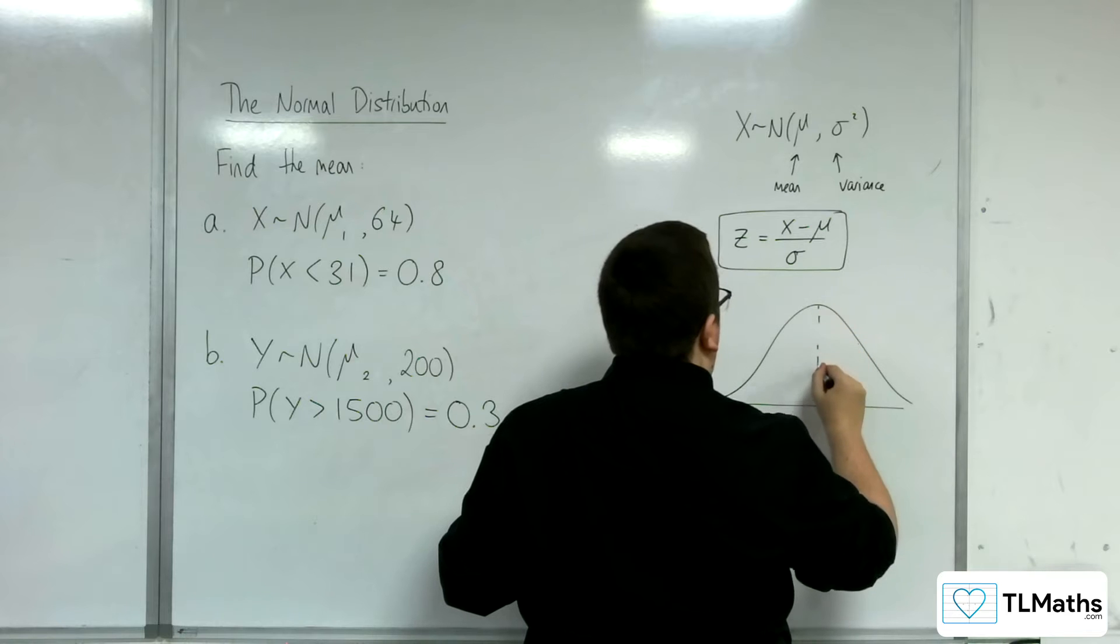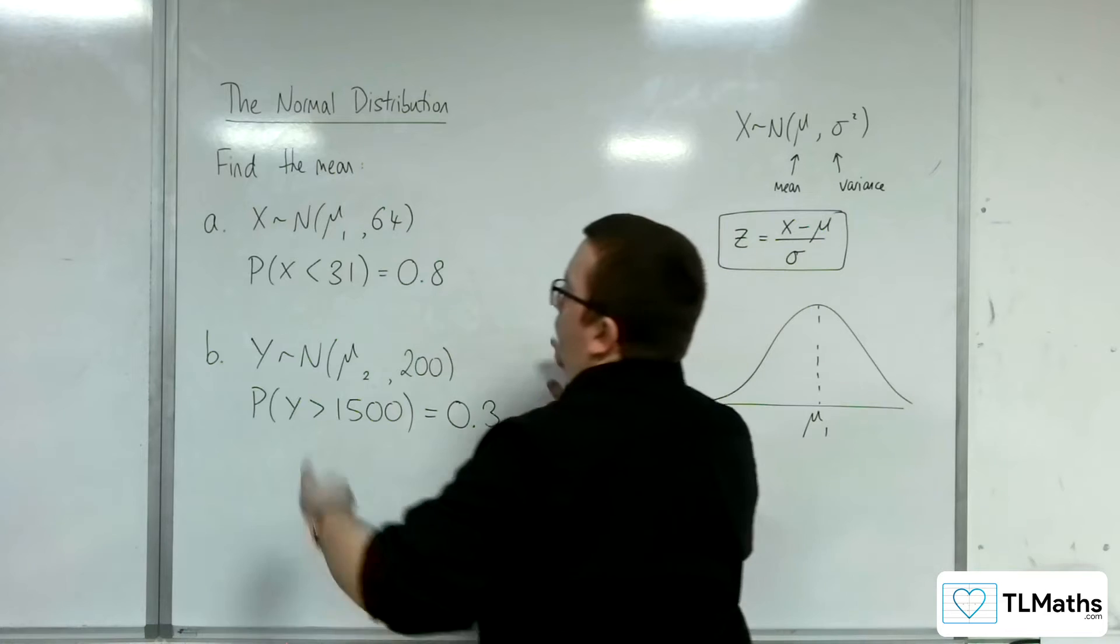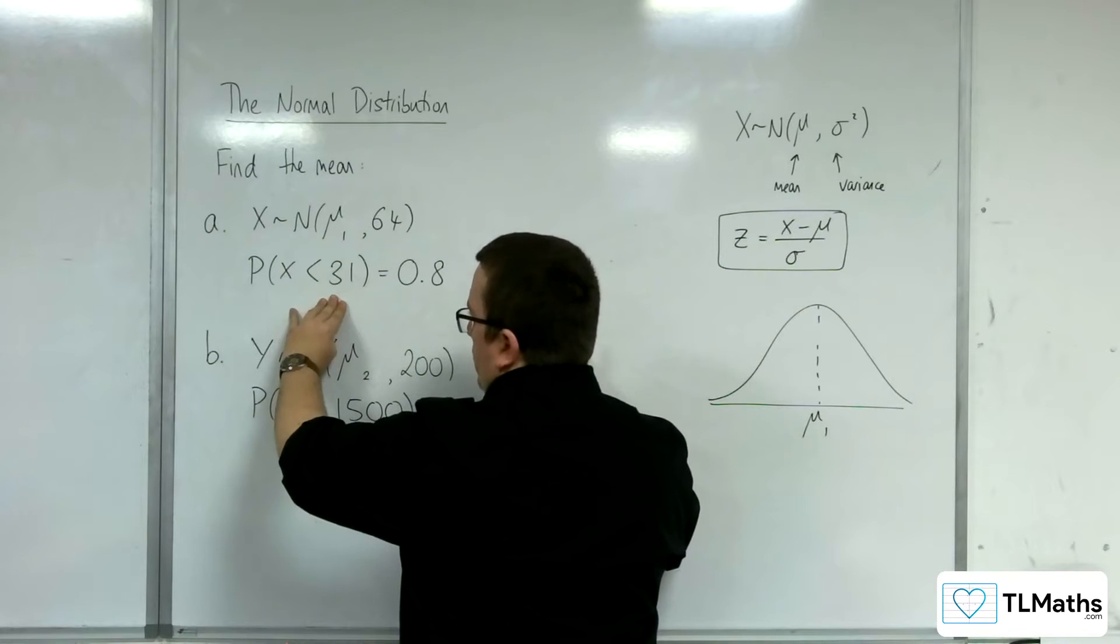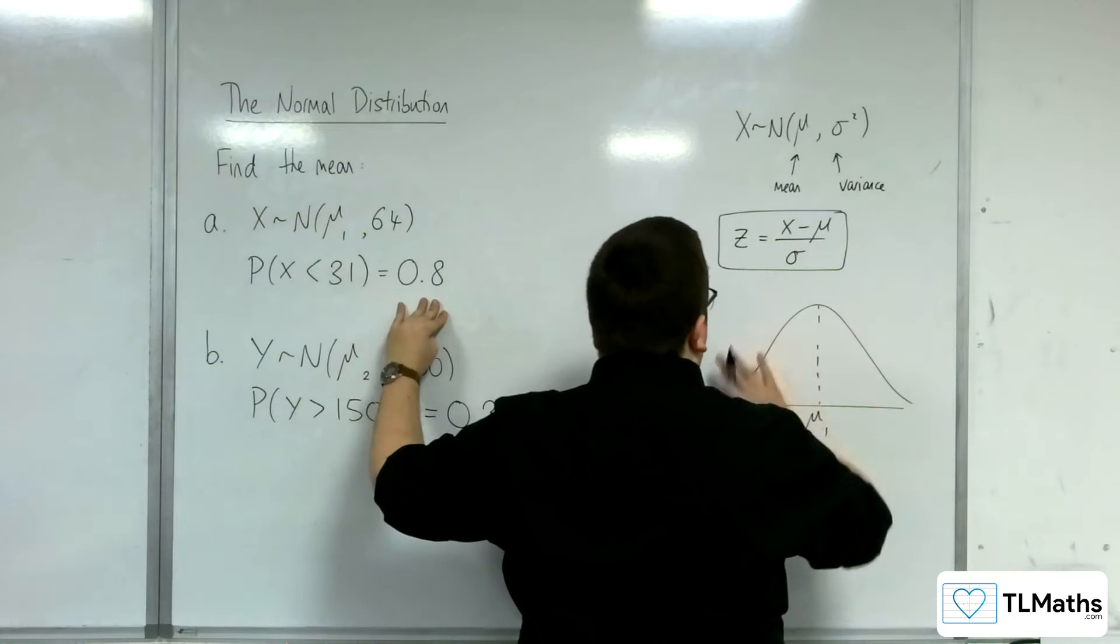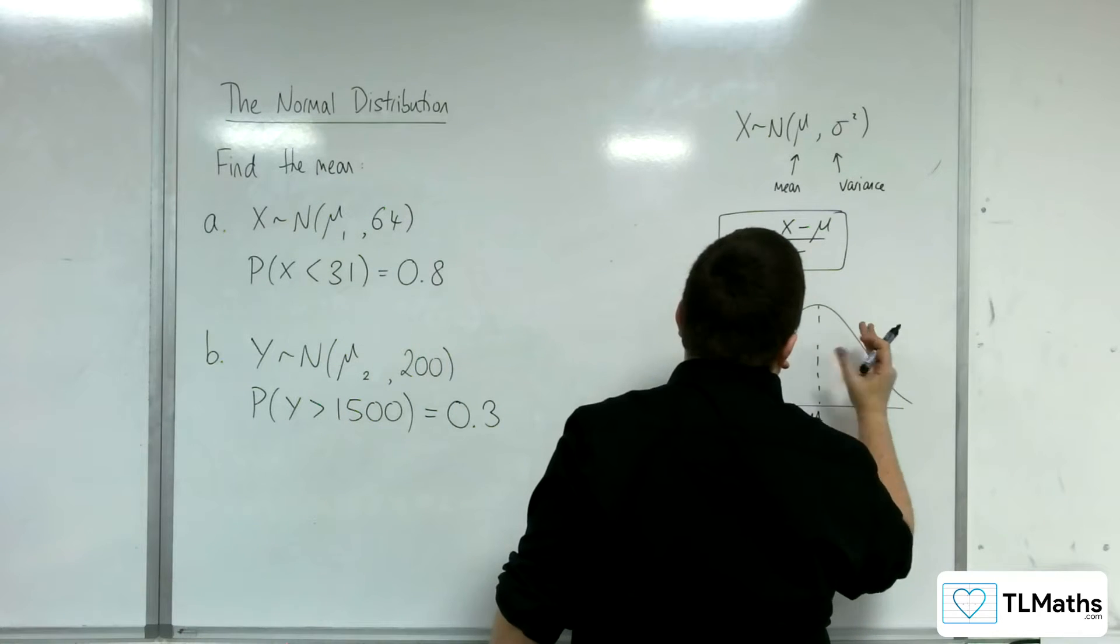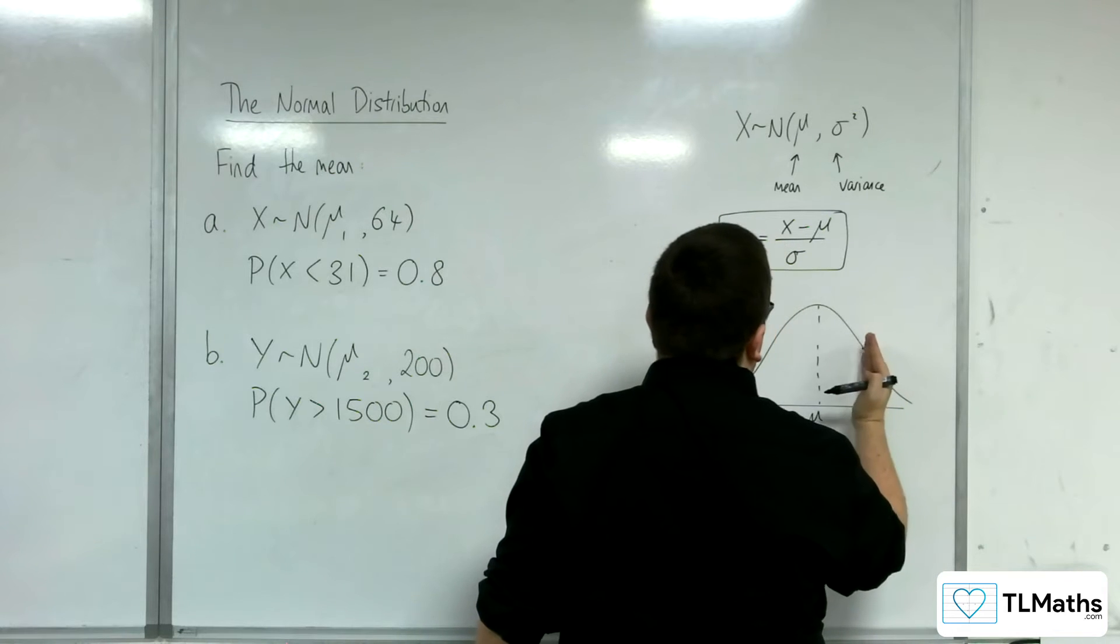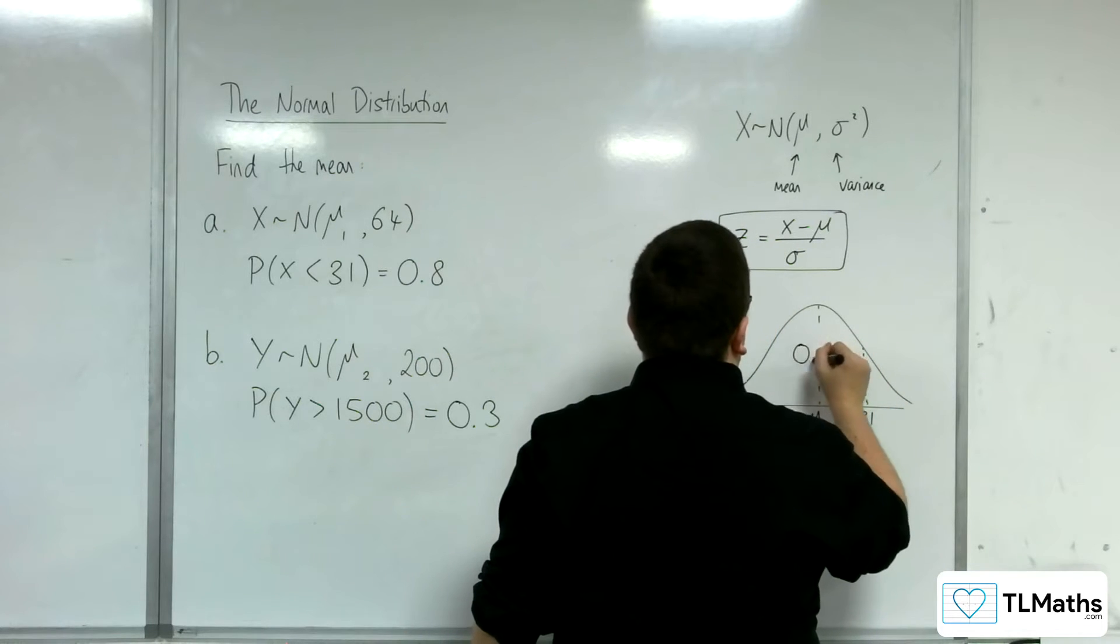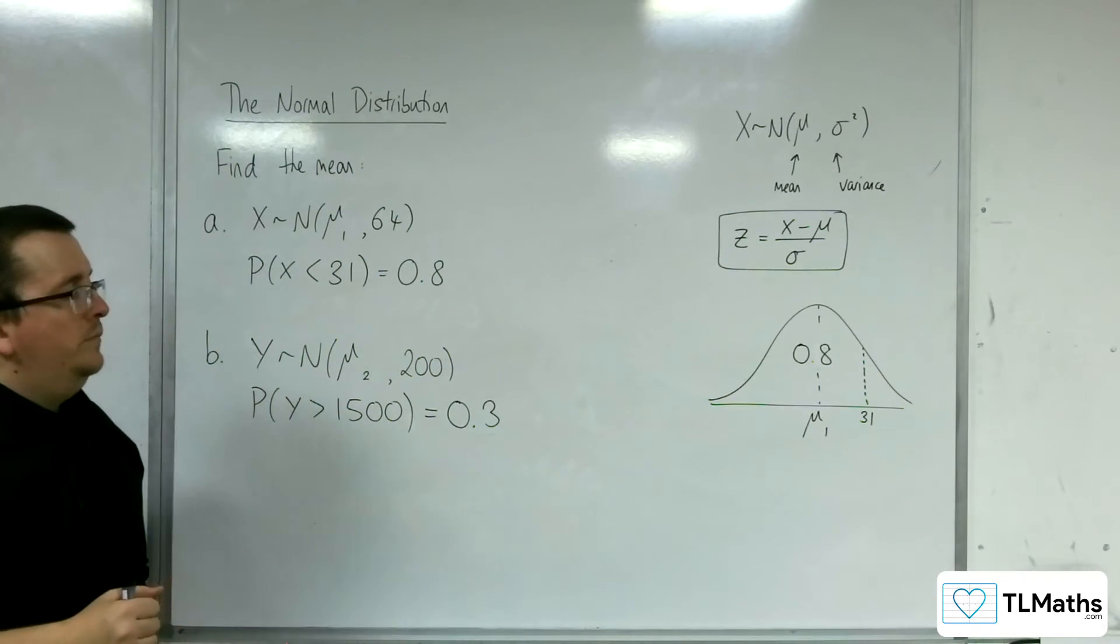The mean is in the middle, so mu 1. We know that to the left of 31 is an area of 0.8. Well, if the whole thing's an area of 1, then to the left be 0.8, that means that the value of 31 must be over to the right. So that is 0.8, that area.